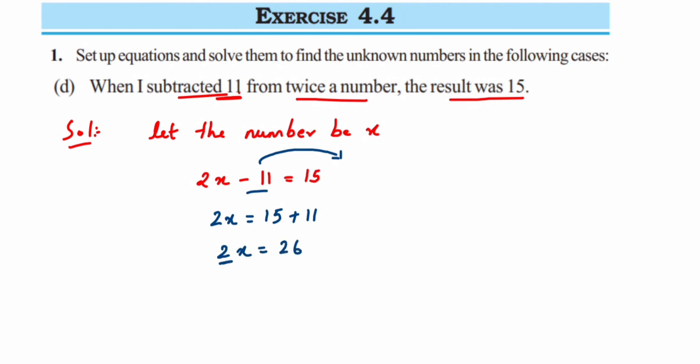Now again, I don't want this 2 over here. The 2 is in multiplication with x, so multiplication transposed to the other side becomes division. When I transpose this to the other side, I'll get x is equal to 26 upon 2. Now cancel out or you can divide it. Two ones are two, two thirteens are twenty-six.